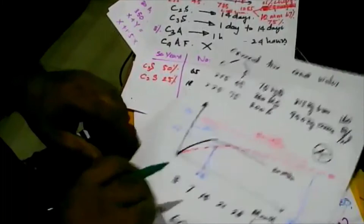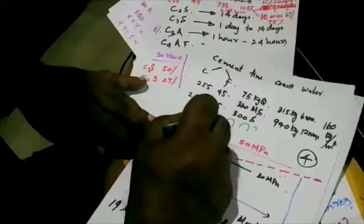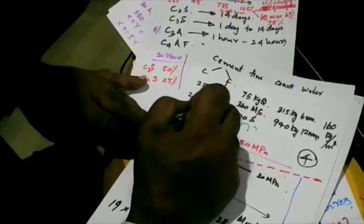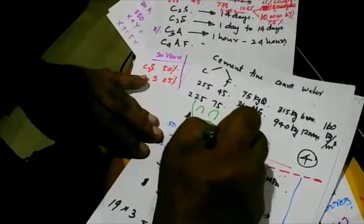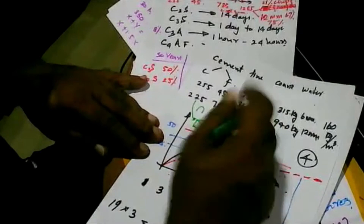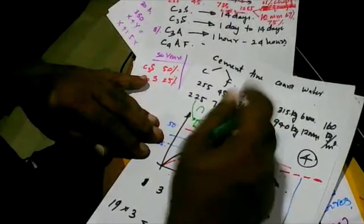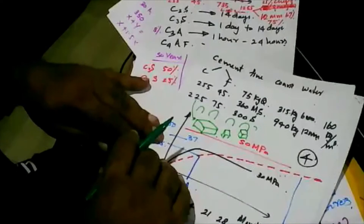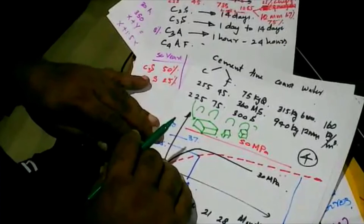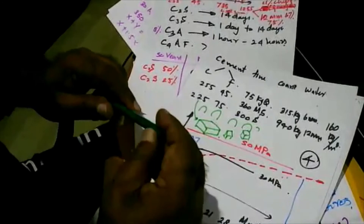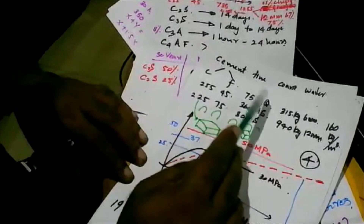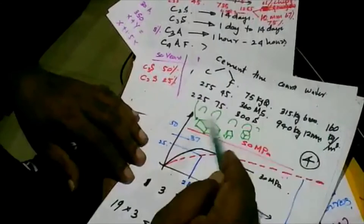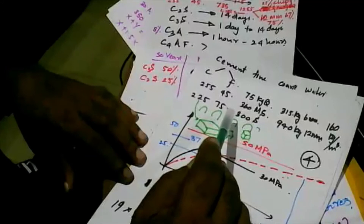We convert weigh-batch quantities to volumetric box sizes for site use. We make separate boxes for each material — cement, fly ash, quarry dust, manufactured sand, natural sand — and paint each box a different color so no one can make a mistake during batching.